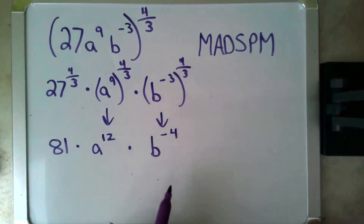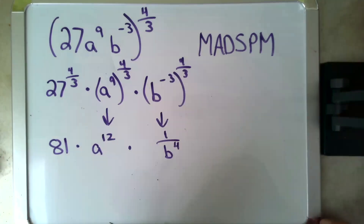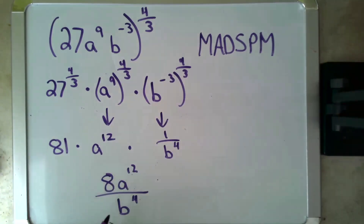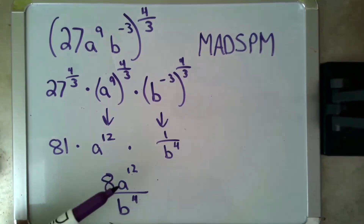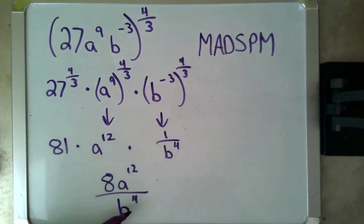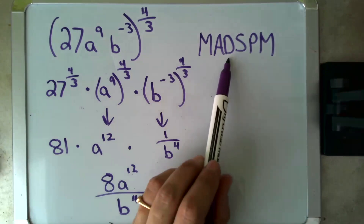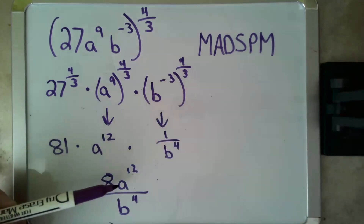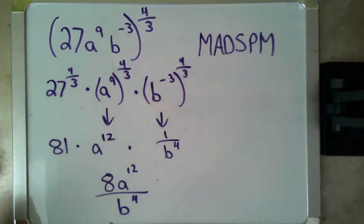When I put those all together, the negative exponent on b means one over the positive, so the final answer is 81 times a to the 12th over b to the fourth. I can't simplify further because a and b do not share a common base. To use the divide-and-subtract-exponents rule from MAD SPAM, you must have a common base — and that's how I know I'm done with the problem.